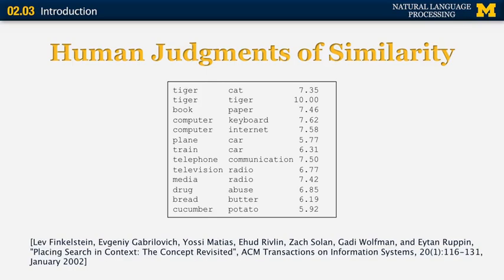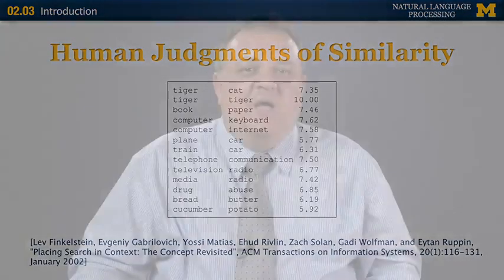Plane and car had a similarity of 5.7. Cucumber and potato had a similarity of 5.92. One interesting thing is that the variance of those scores was actually pretty high, so clearly there was not much user agreement whether certain two words are very similar or less similar, but they still agreed generally about the overall level of similarity.